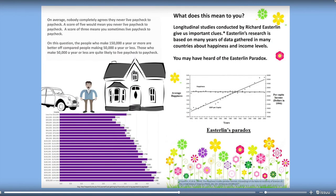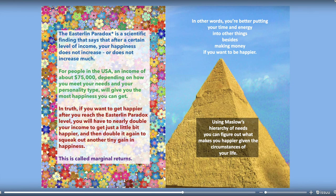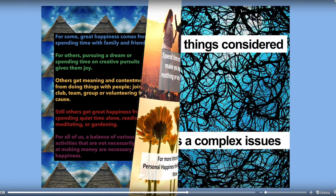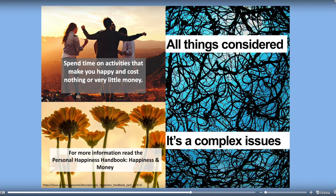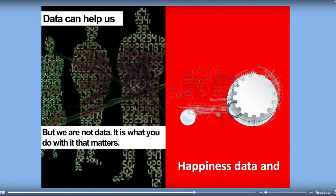This is just one way you can present to your community — presenting data and information so that people can really take it personally. When people hear about a happiness report card or happiness data, they want something they can take personally. They don't want just a numbers-based report or something that's only about policy — they want something very personal as well. I urge you to blend it all together. Because data is complex and humans are complex, use the data in a way that really matters to people.